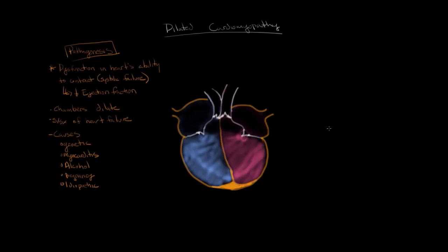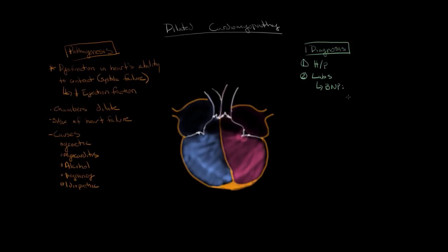How do we diagnose dilated cardiomyopathy? The first step is the history and physical. The signs and symptoms are consistent with heart failure, but not many are specific to dilated cardiomyopathy. For labs, one of the most important is brain natriuretic peptide, or BNP. BNP is elevated in conditions that cause stretching of the heart, such as dilated cardiomyopathy — but it's not very specific, as it's elevated in many other causes of heart failure as well.